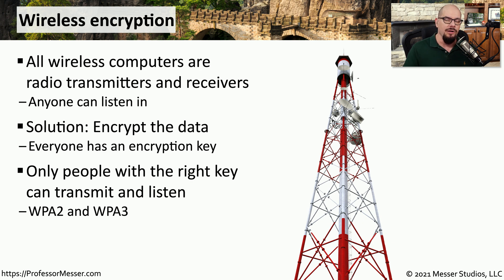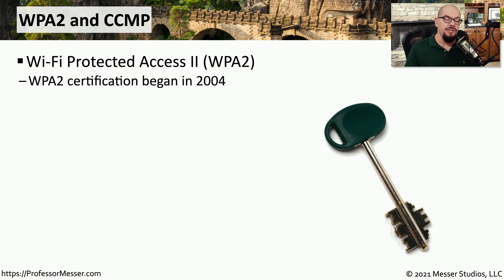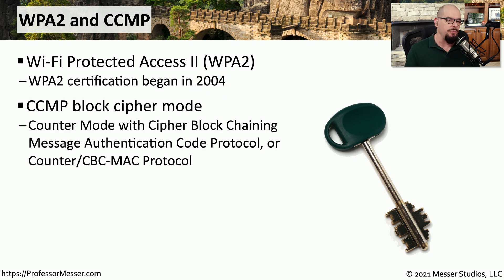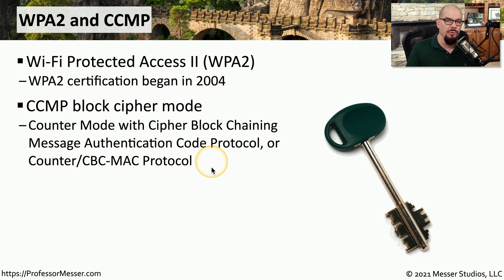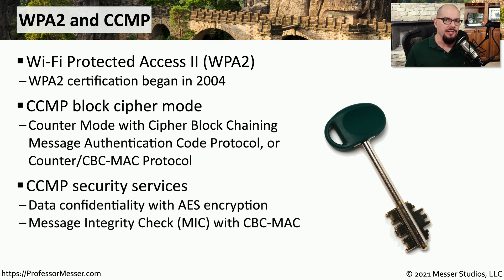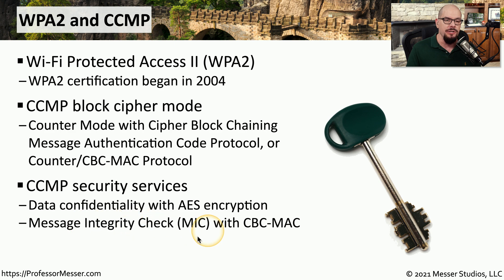We commonly see encryption implemented on today's wireless networks using WPA2 and WPA3. WPA2 is Wi-Fi Protected Access Version 2; certification began in 2004. It uses a block mode of encryption called CCMP, which stands for Counter Mode with Cipher Blockchaining Message Authentication Code Protocol — also referred to as Counter/CBC-MAC Protocol. CCMP uses the AES encryption mechanism for data confidentiality and uses CBC-MAC as the Message Integrity Check, or MIC.